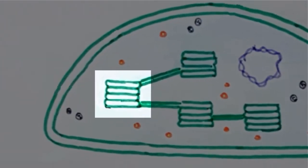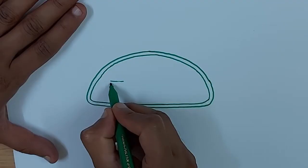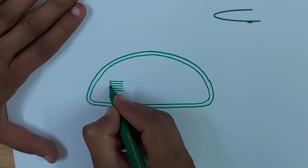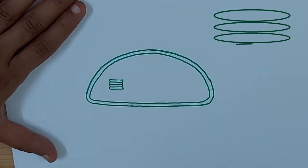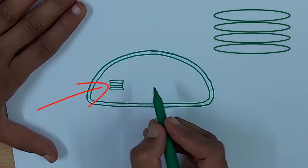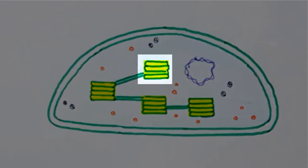To draw grana, draw a sac-like structure, i.e., one thylakoid, and place other thylakoids on it like a stack or pile of coins. The singular is granum, and the plural is grana. Draw more grana scattered in the matrix.